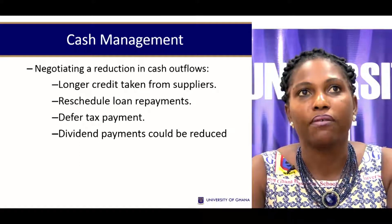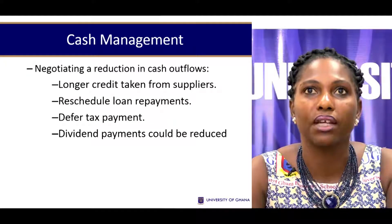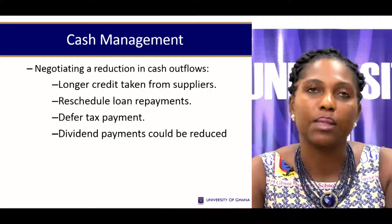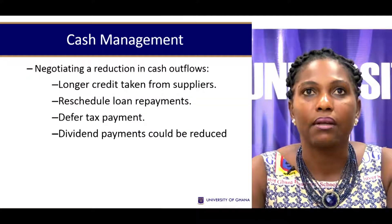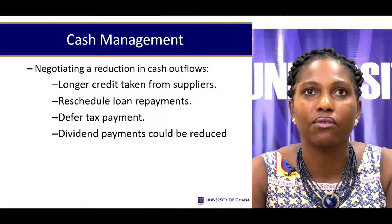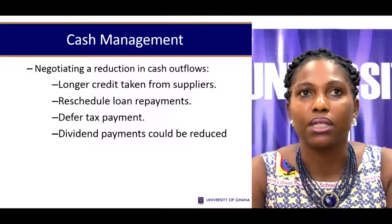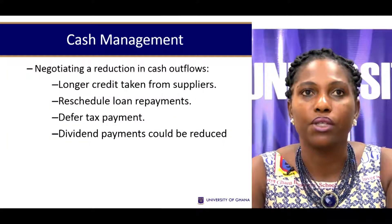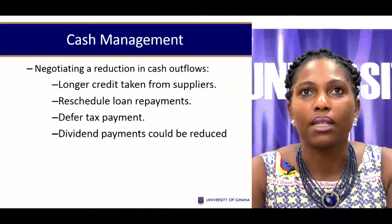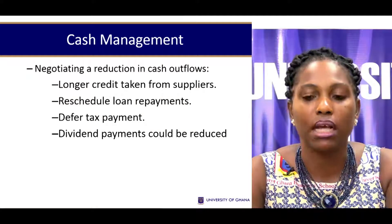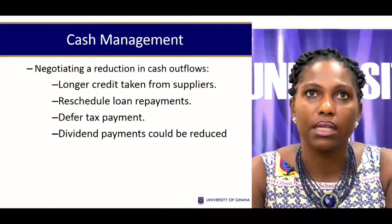Another way of easing cash rigidities is to negotiate reductions in cash outflows. This may mean taking longer credit from suppliers — though that may come at a cost. You could also reschedule loan repayments, defer tax payments, or reduce dividend payments. All these have the potential to reduce cash outflows and minimize the risk of going into a liquidity crisis.